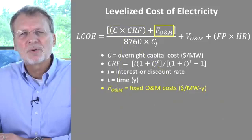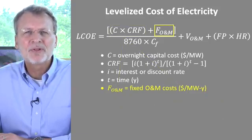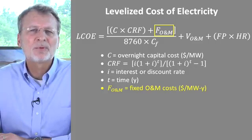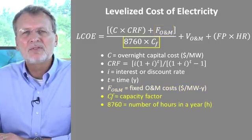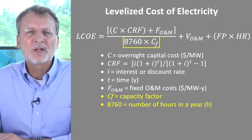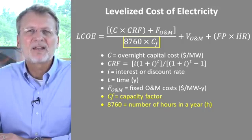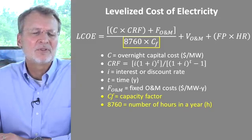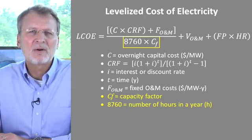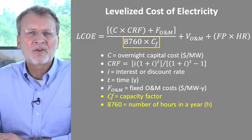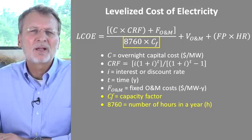The next component in the LCOE equation is the annual fixed cost to run this particular type of plant. Like the adjusted capital cost, it too has units of dollars per megawatt per year. The sum of these two costs is converted into dollars per megawatt hour, which are the units for LCOE, by dividing by the capacity factor for the plant times the number of hours in a year, which is 8,670 hours. So at this point in the calculation, we have the capital and fixed costs expressed in dollars per megawatt hour.